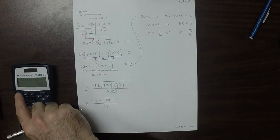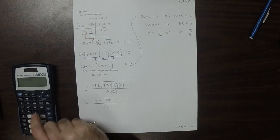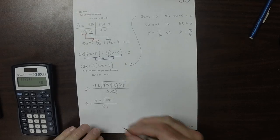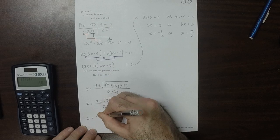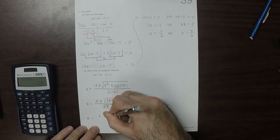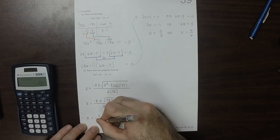So the square root of 784 is 28, so that would be negative 8 plus or minus 28 over 24.